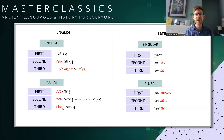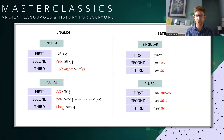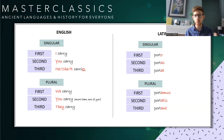A bit of a recap first. We looked last week at verbs. We reminded ourselves that verbs change in Latin not because of pronouns — not because of words like I, you, he, she, it, we, you, they — but because of their endings. The ending gives you the information about the person doing the verb. There are three persons: first person 'I', second person 'you', third person 'he', 'she', or 'it', and then of course they can have plurals: we, you, and they.